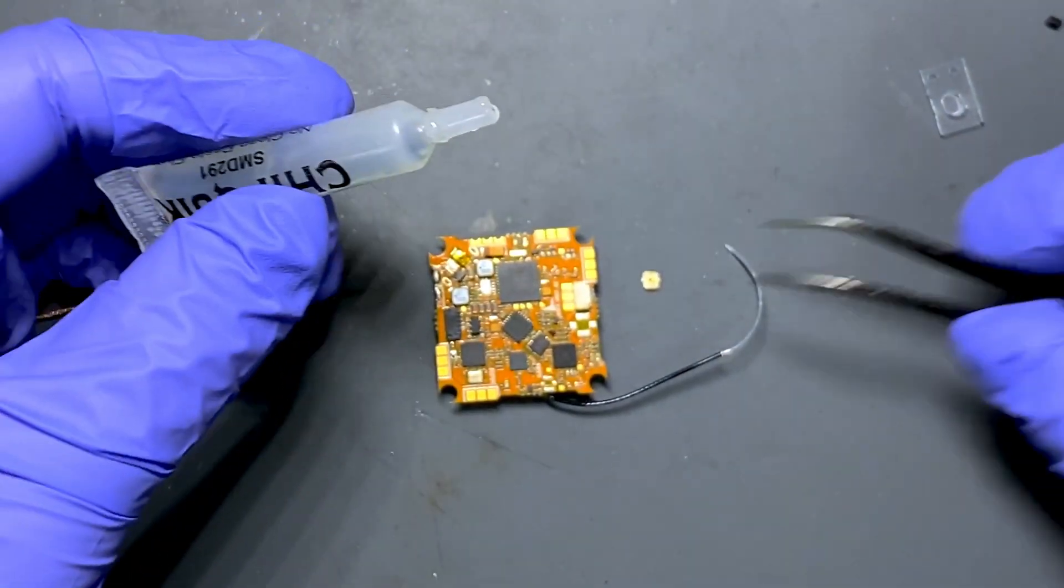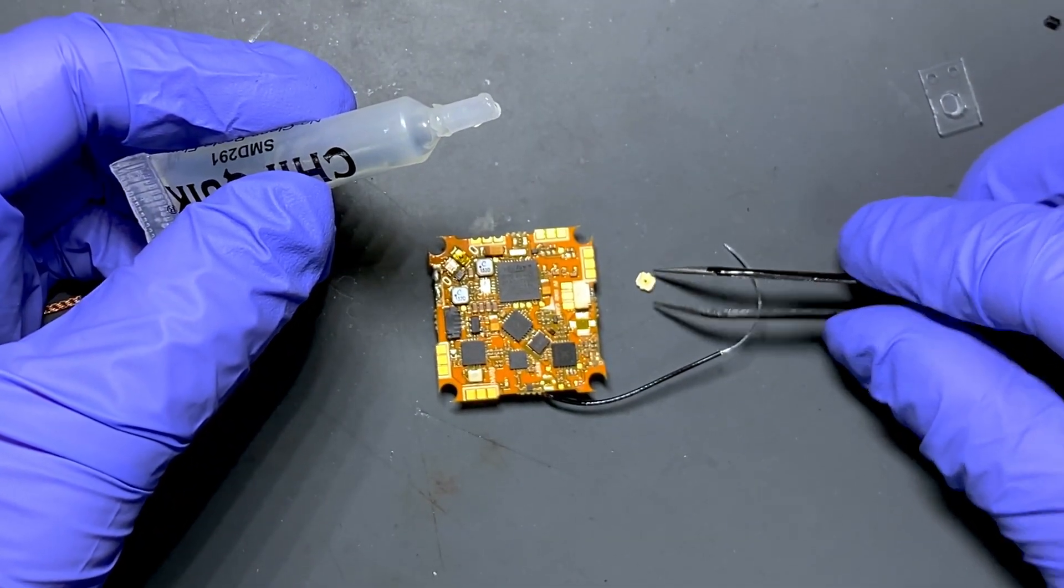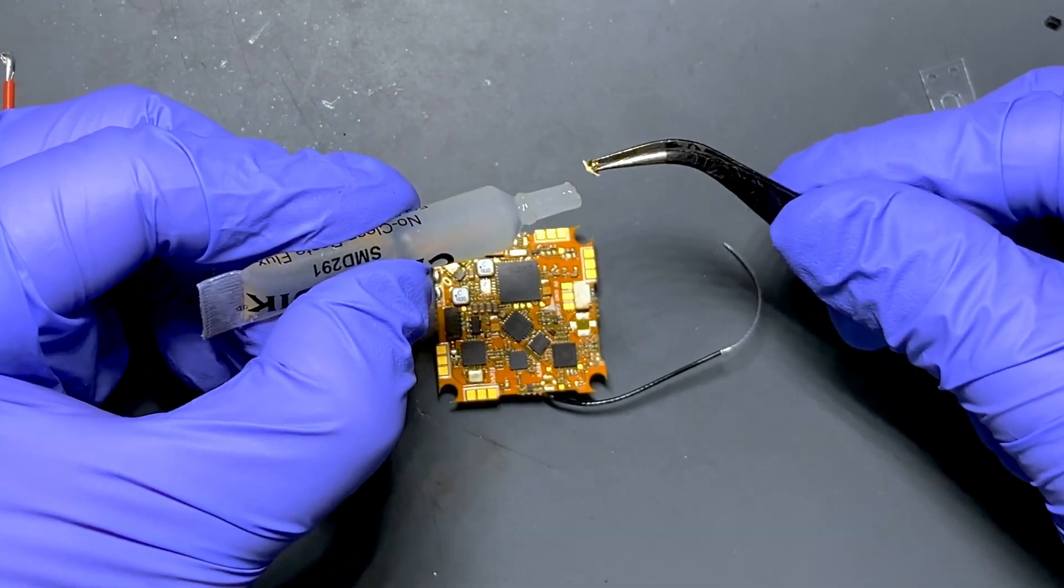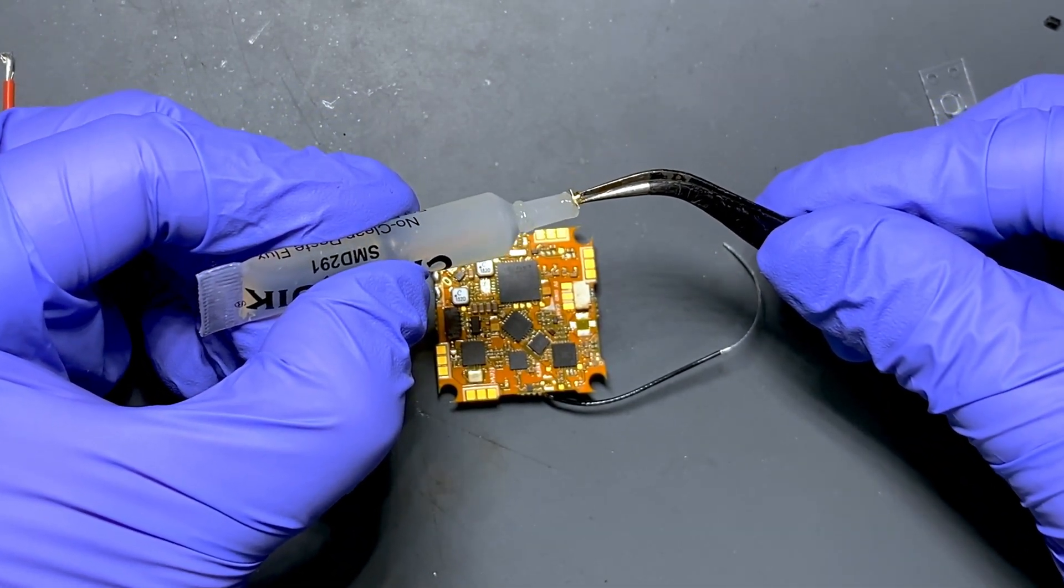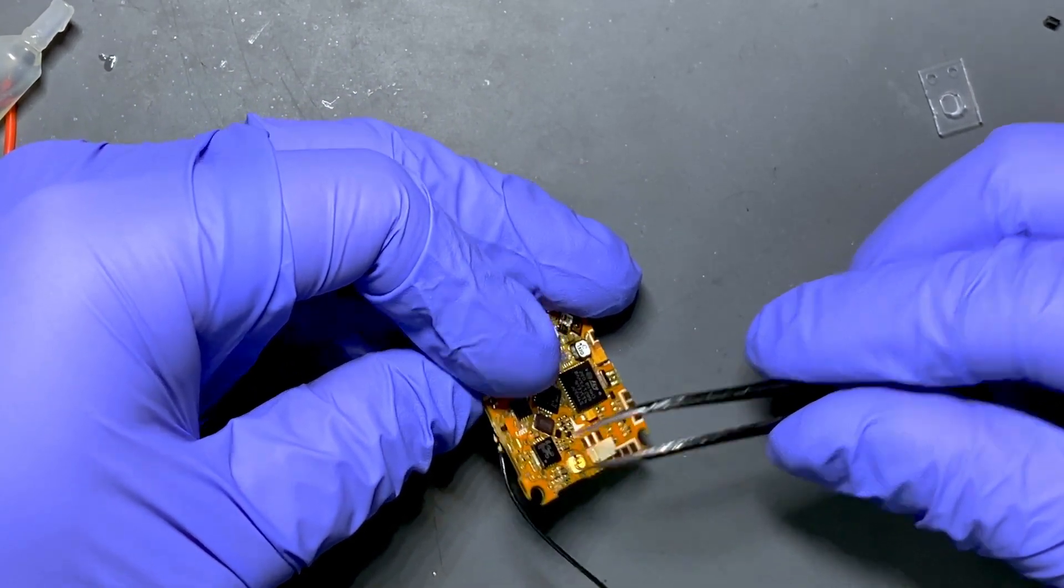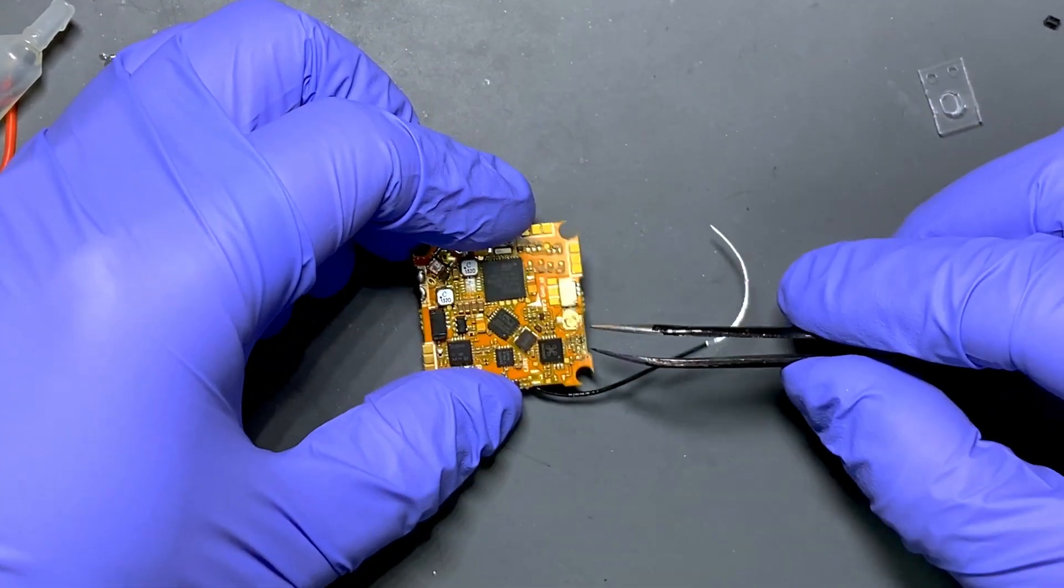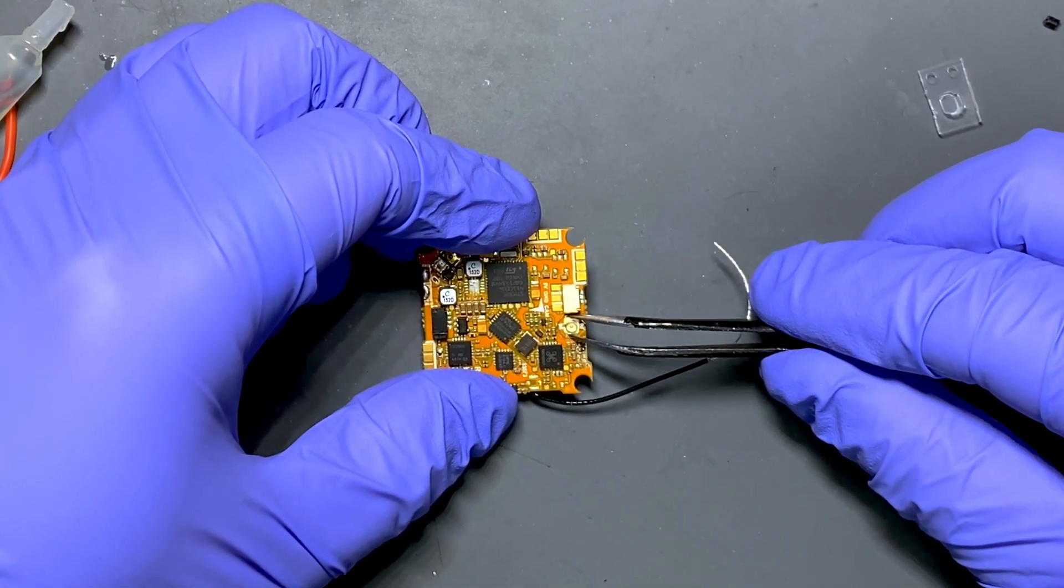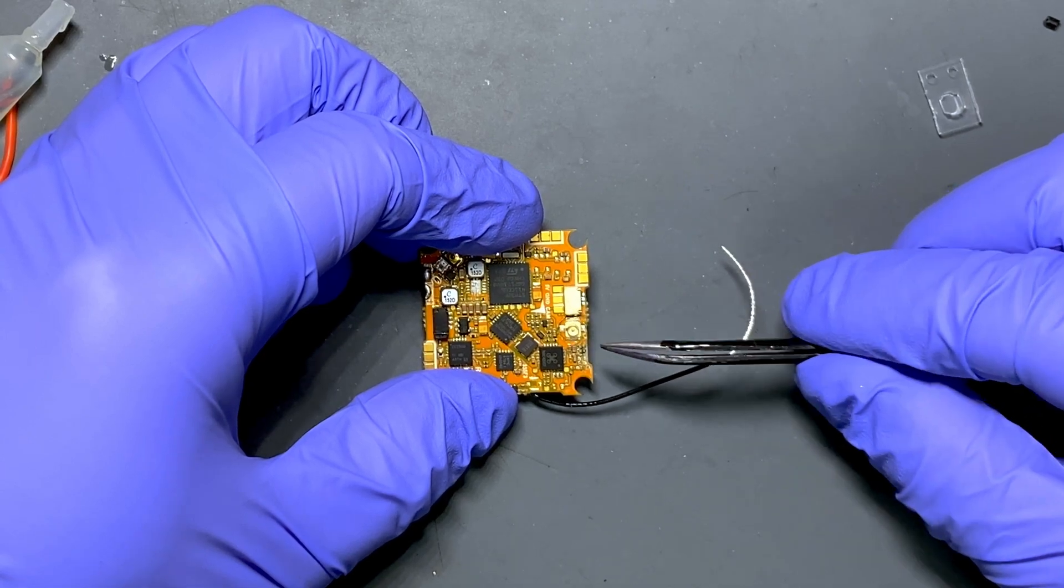The next step will be adding a little bit of flux to the connector, the bottom of the connector. I'll just add a little bit on the bottom. Then you would like to put it on because when you have flux, it will stick to it. Then you want to locate it perfectly.